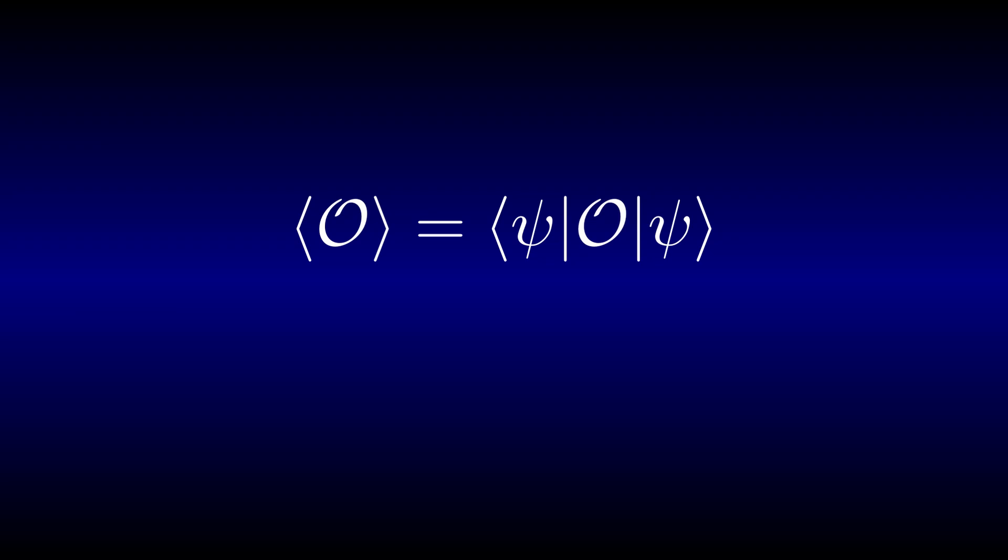For example, the overlap of the wave function psi with phi j is just given by bra-phi-j ket-psi.